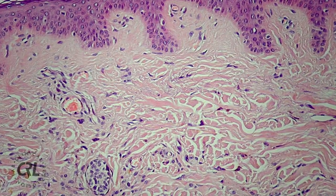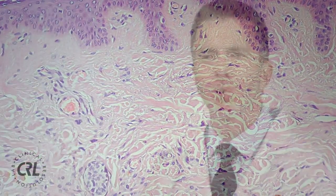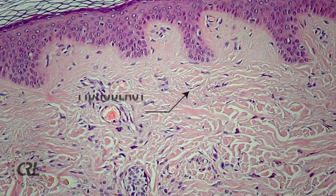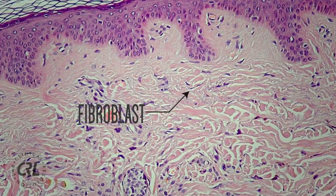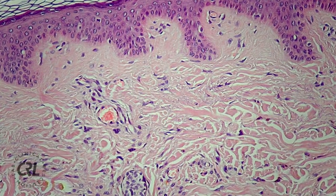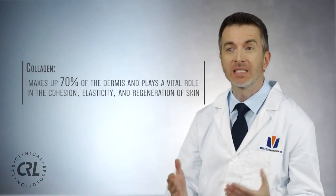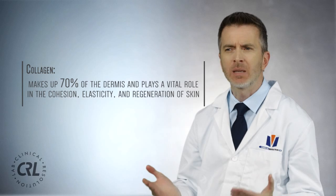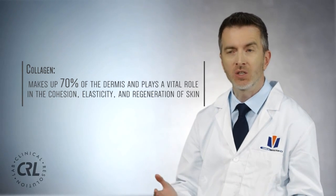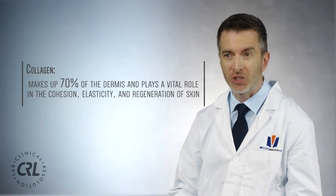The dermis, commonly known as the true skin, is the most important layer since it is home to the main functioning components of the skin. It is made up of fibroblasts, which mainly produce collagen and elastin. Collagen makes up 70% of the dermis and it plays a vital role in the cohesion, elasticity, and regeneration of skin.